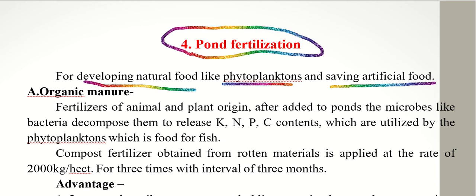In pond fertilization, the fertilizers used in fish culture ponds belong to two categories: the first type is organic fertilizers, called organic manure, and the second type is inorganic fertilizers.